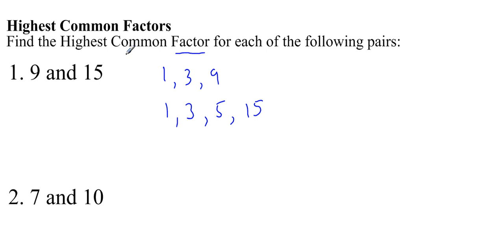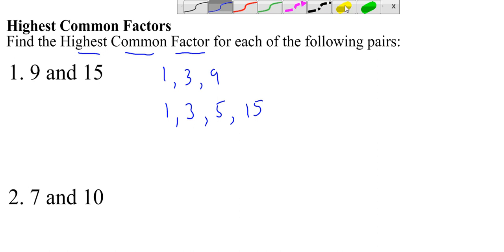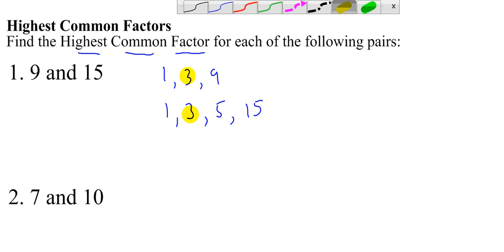Now, that middle word, common, basically refers to numbers that are in both lists — numbers which are common to both lists. You can see straight away that 1 is in both lists — it's common to both the factors of 9 and 15. 3 is also common to both lists. Now the first word there is highest. So the highest common factor — and you've probably already guessed it — is 3, because it's the highest number that's in both lists of factors of 9 and 15.